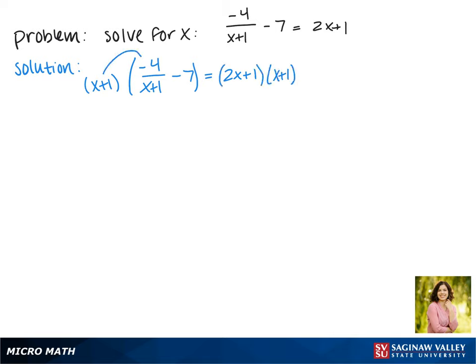When we distribute it to both of our terms on the left, in that first term it will cancel out completely with the denominator and leave us just with a negative 4, and then on the second term we need to distribute that negative 7 to it.